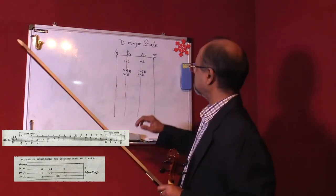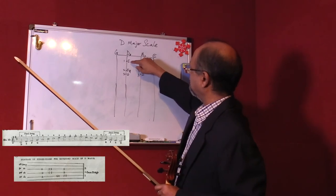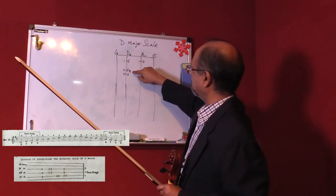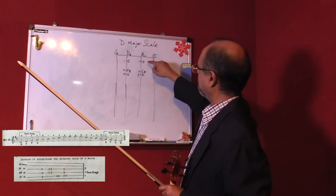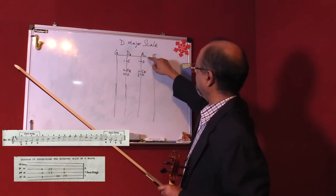Now you will notice that there is a gap here between the first and the second finger on the D string, then again the first and the second finger on the A string.